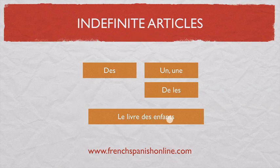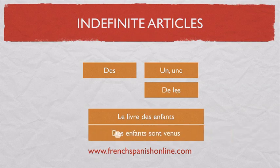'Le livre des enfants' — the book of the children, or the children's book. Here we have the definite article, a contraction of 'de les'. But if you say 'Des enfants sont venus' — children came, or some children came — here we have the indefinite article. But the form is the same.